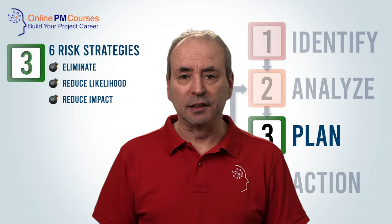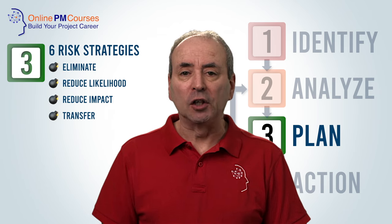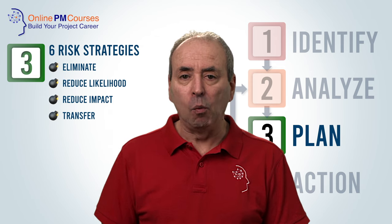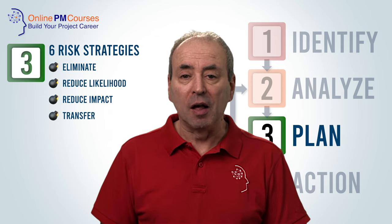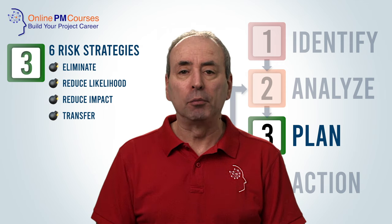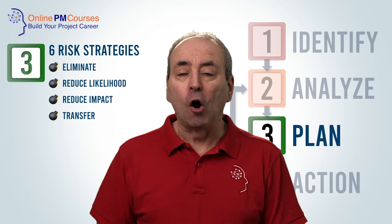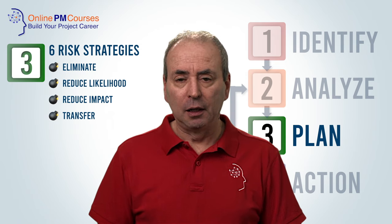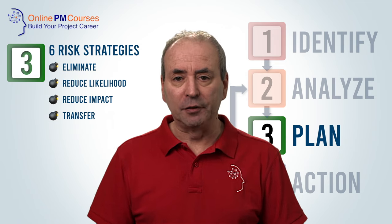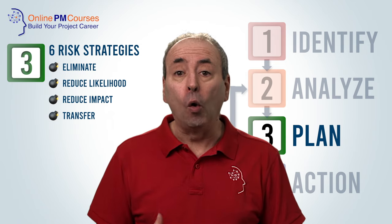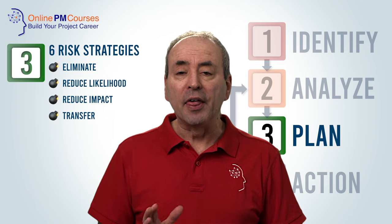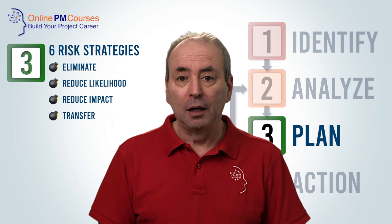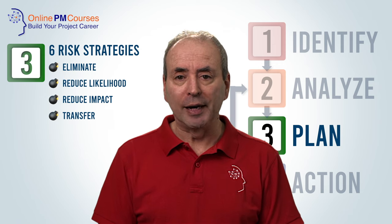The next strategy is to try to transfer some or all of the risk so that the impact affects someone or something else rather than your project. The commonest examples of this are insurance products, which transfer the financial element of a risk, or contracts, where the contractor takes on the risk as part of the contractual arrangement.